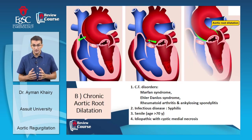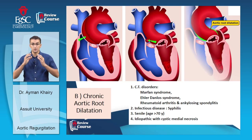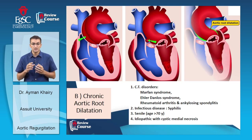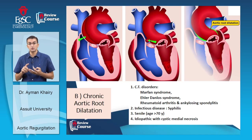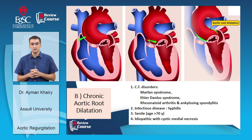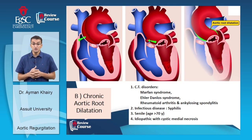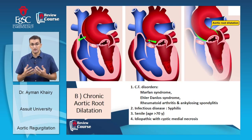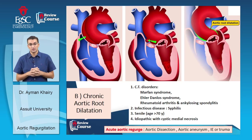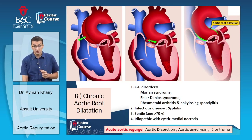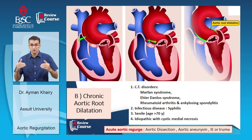Chronic aortic root dilatation — where the pathology is in the aorta, not in the valve cusps — has four main causes: connective tissue disorders such as Marfan syndrome, Ehlers-Danlos syndrome, rheumatoid arthritis, or ankylosing spondylitis; syphilis; age over 70 senile degenerative cause; or idiopathic cystic medial necrosis. Acute aortic regurgitation can be caused by aortic aneurysm, aortic dissection, infective endocarditis, or trauma resulting in rupture of the cusps.